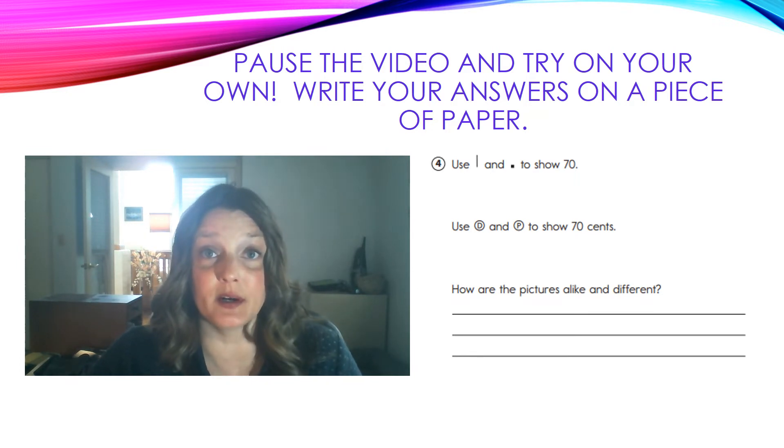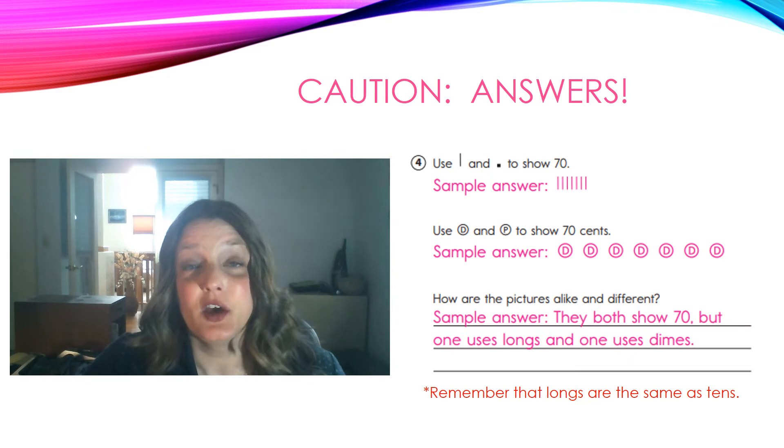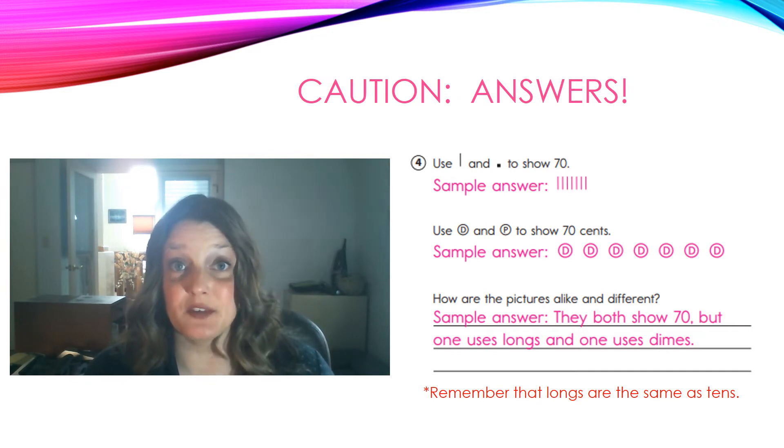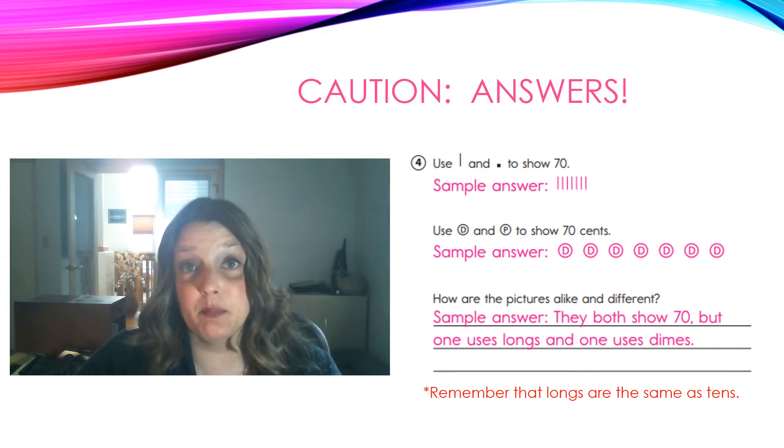Write your answers on your paper, and then we'll check to see how you did. Let's see how you did. For the first one, you could have drawn 7 straight lines, or 7 tens. That equals 70. In the next one, you could have drawn 7 dimes. Each dime is worth 10 cents. So, if you have 7 dimes, that would be 70 cents. The way they are alike is that they both show 70. But, one uses longs, and the other uses dimes. Remember, longs are the same as tens. Those are those straight lines.